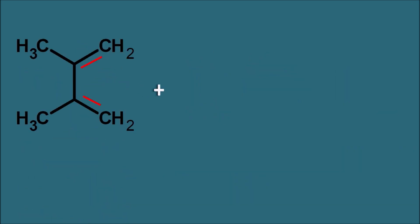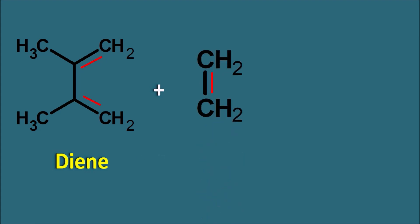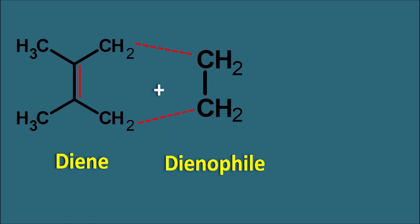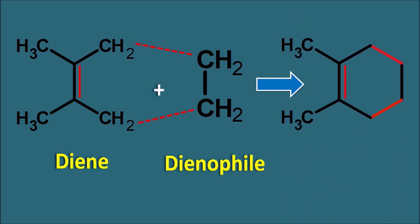Let us take another example. The diene has two pi bonds and the dienophile has one pi bond. When they react they form a product with a cyclic structure. The dienophile acts as a supplier of pi bonds. The pi bond within the dienophile interacts with a carbon of the diene and forms a sigma bond. Immediately, this pi bond is delocalized and forms another pi bond, which consequently converts to another sigma bond. In this way they form a linkage and produce a cyclic product — a cyclohexene derivative with dimethyl substitution.